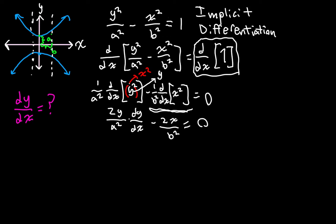Now all I'm going to do is add 2x over b² to both sides. We have 2x over b² is equal to 2y over a² times dy/dx. I'm just going to divide both sides by 2y and multiply both sides by a². So we're going to have that dy/dx is equal to a² over 2y times 2x over b². It's really just the same as dividing by 2y over a².